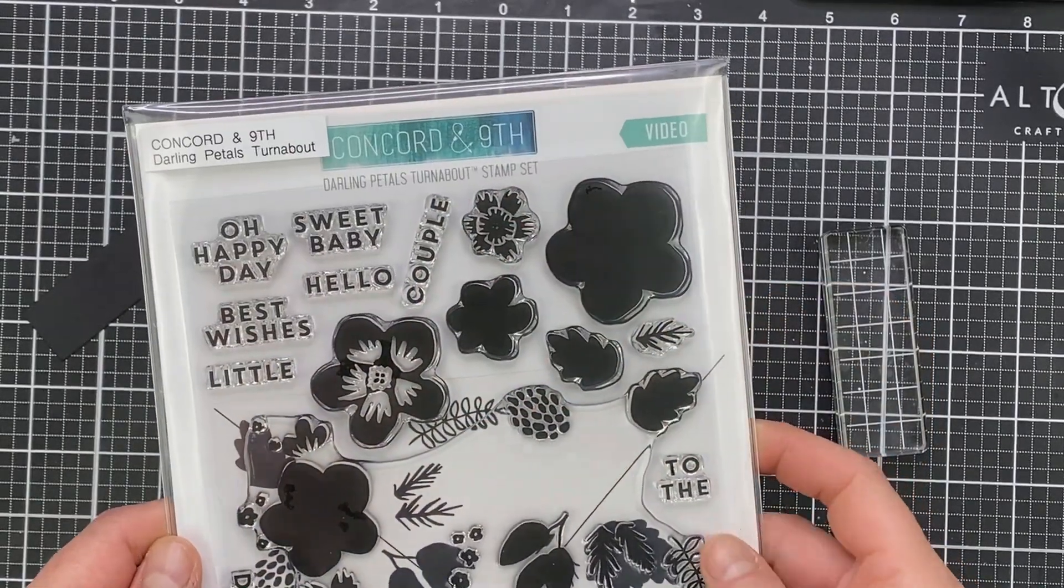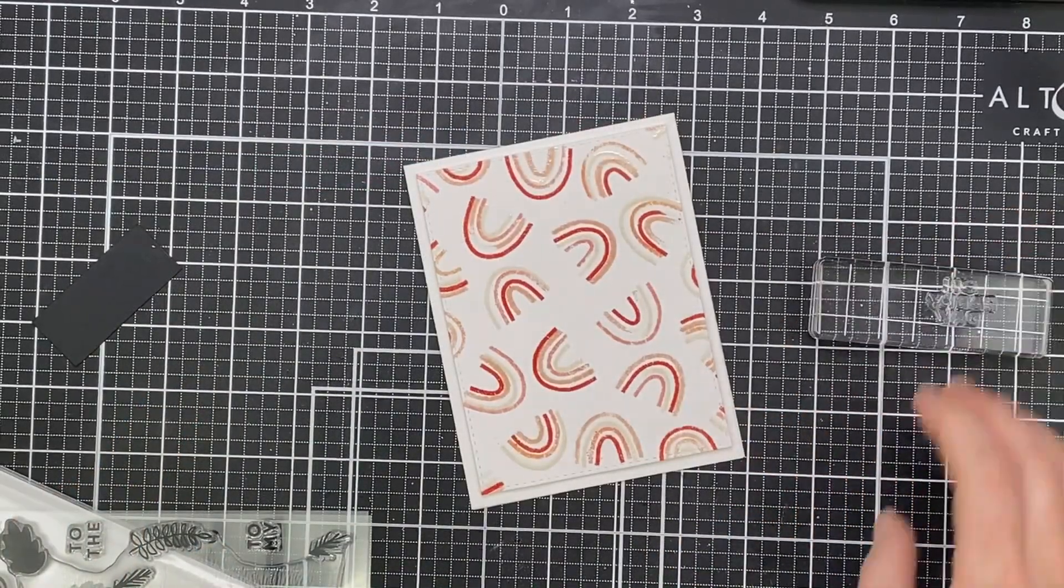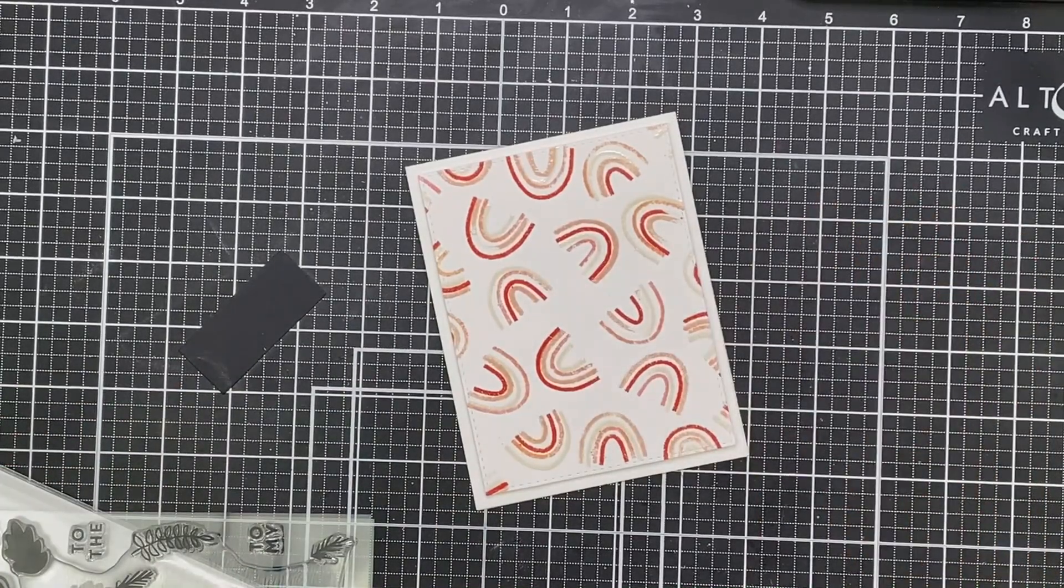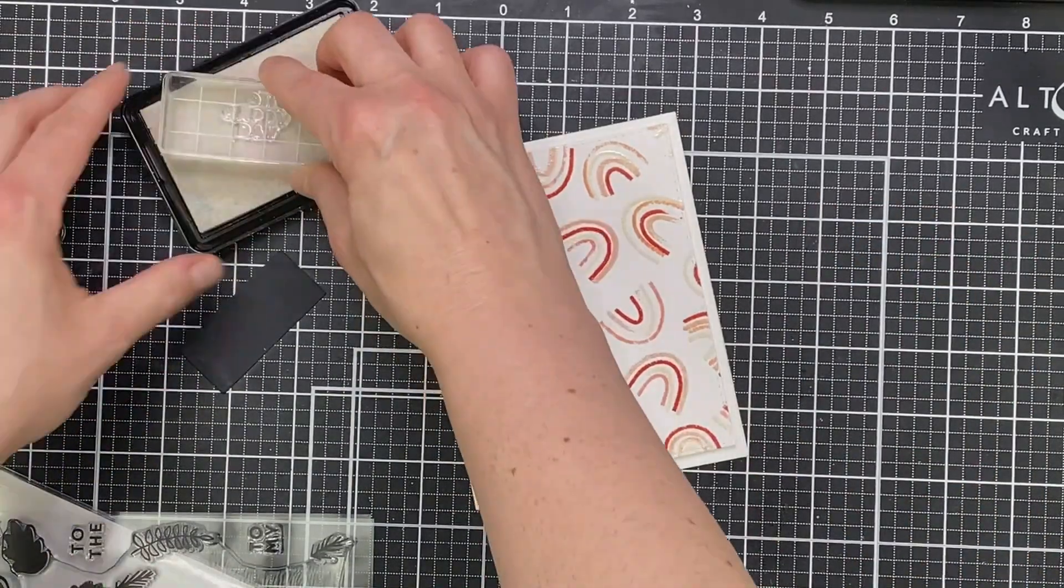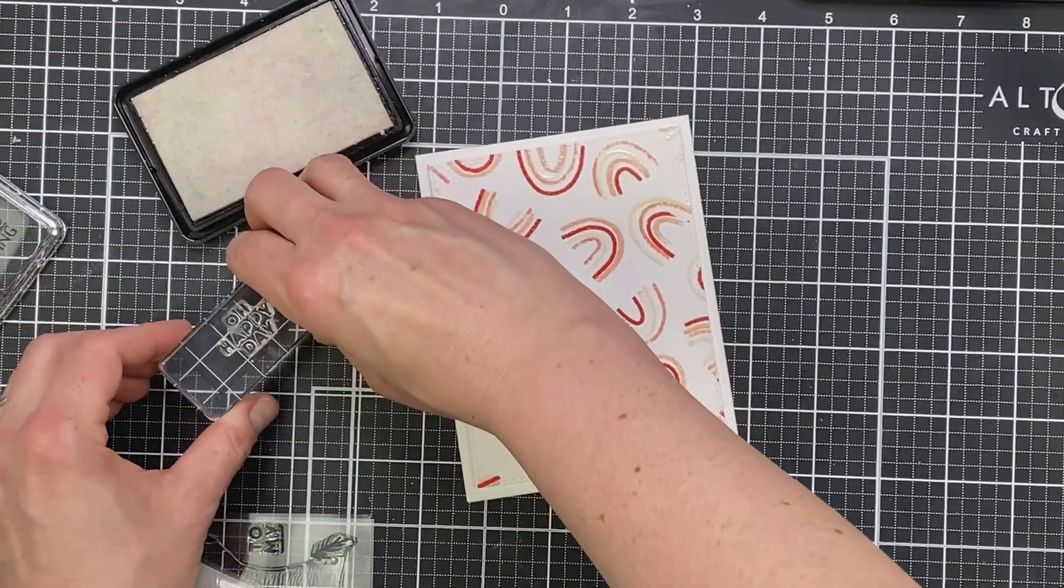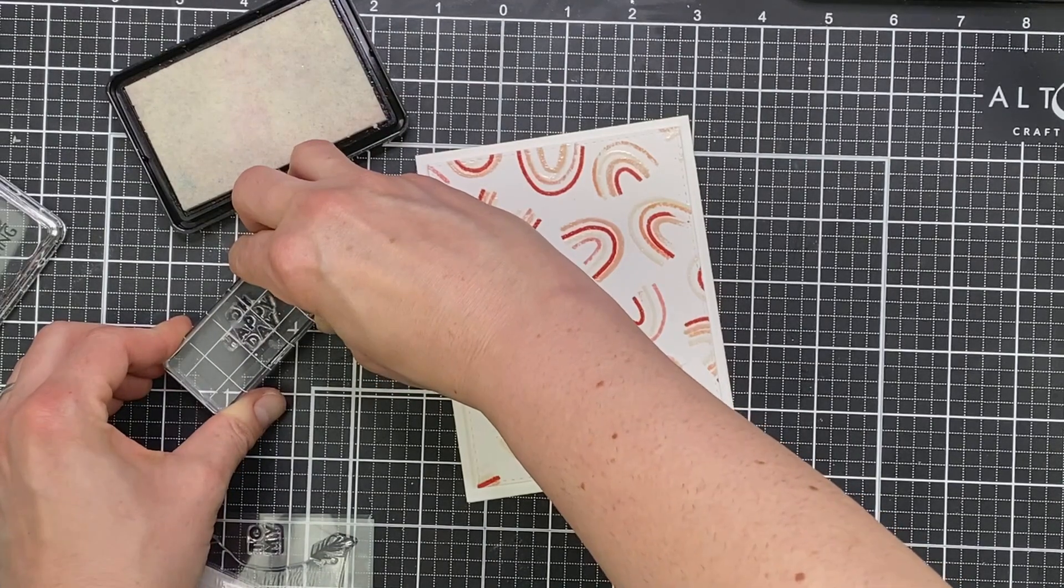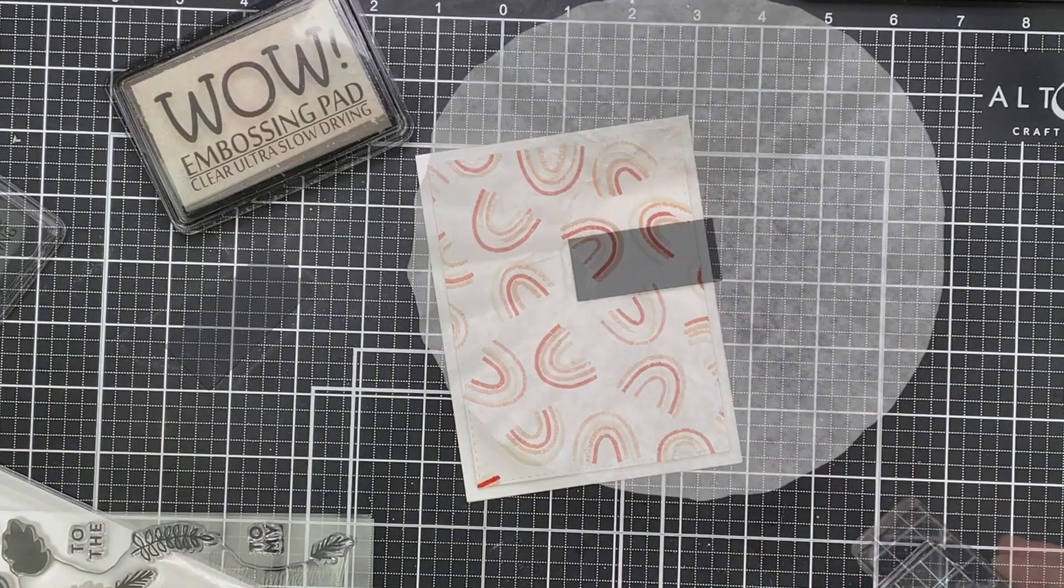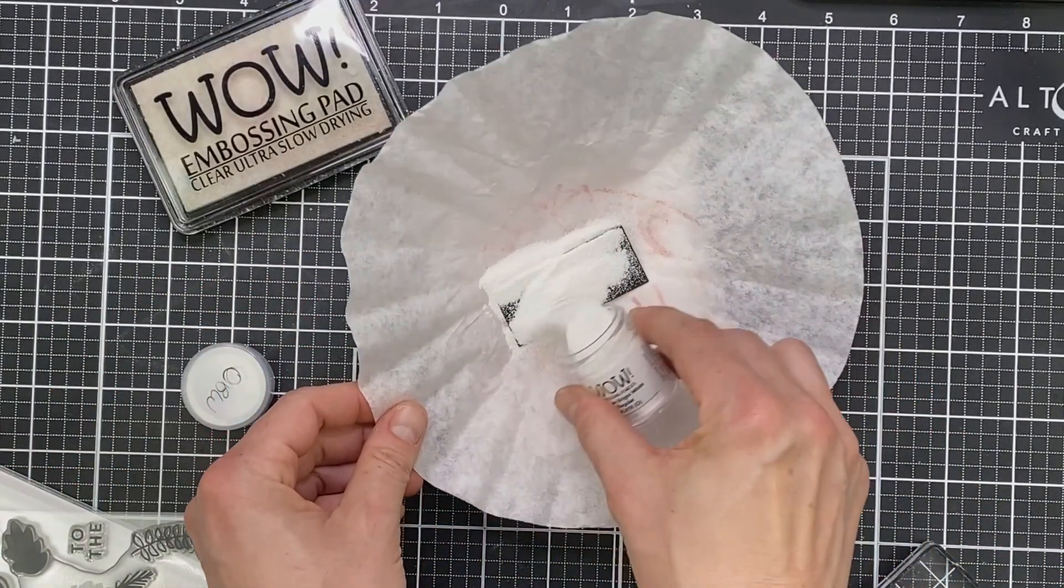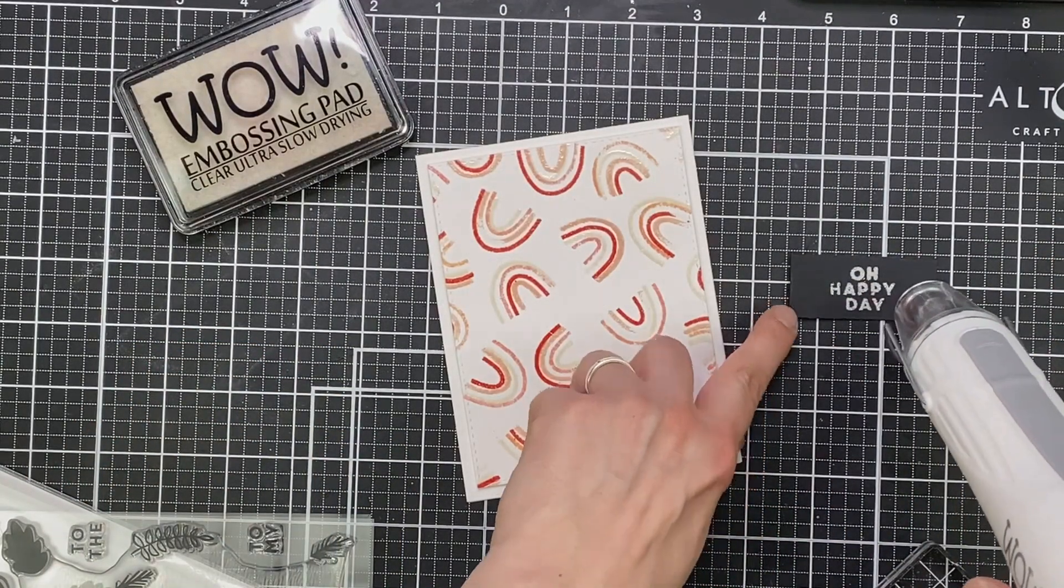So I'm going to keep this really clean and simple. I've die cut my panel with a stitched rectangle die from Simon Says Stamp. I've applied that with some foam tape onto a white panel of 110 pound Neenah Solar White cardstock. For my sentiment, I'm using the darling petals turnabout, which I am going to choose one of the sentiments from, heat emboss in opaque bright white embossing powder onto black cardstock, and then I'm going to heat that up and then trim down that panel, pop it up on another strip of foam tape just into the center.